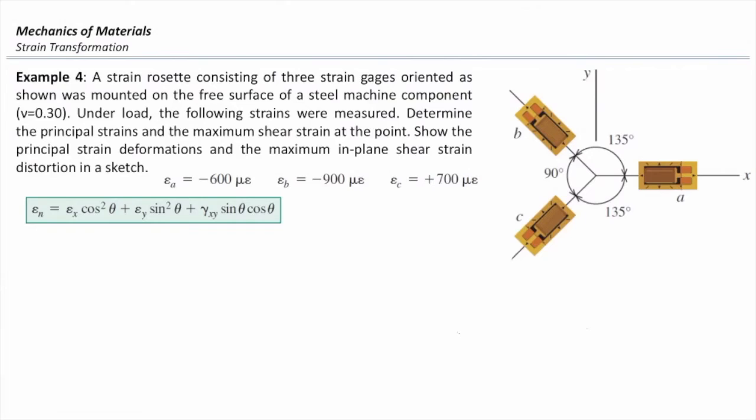Consider this case. A strain rosette consisting of three strain gauges oriented as shown was mounted on a free surface of a steel machine component. Poisson ratio of that steel is 0.3. Under load,